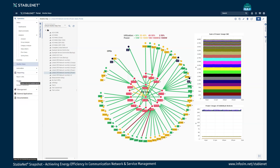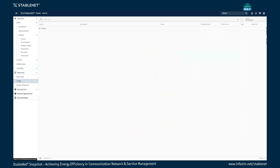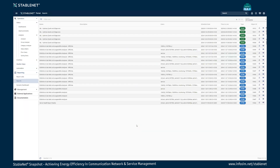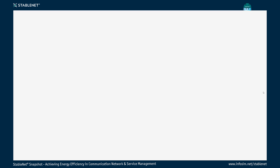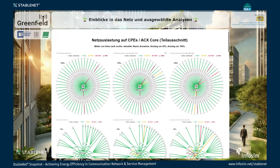We also wanted to combine this with additional reporting, so we used the reporting function of StableNet to create a story about all these observations. We have a similar weather map as before — apologies for the German titles — with the core devices collapsed into a single node so we can view only the customer premise equipment.